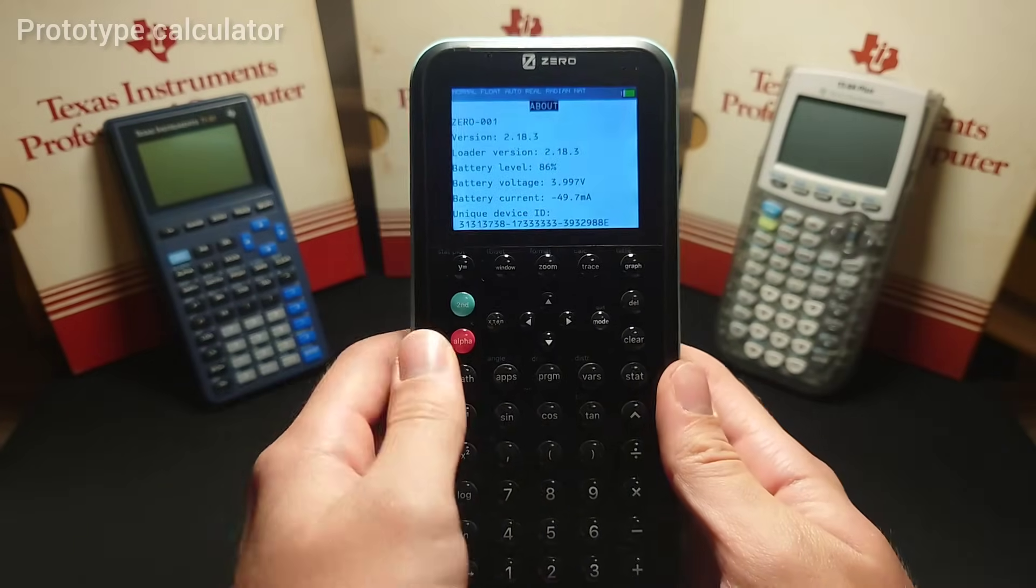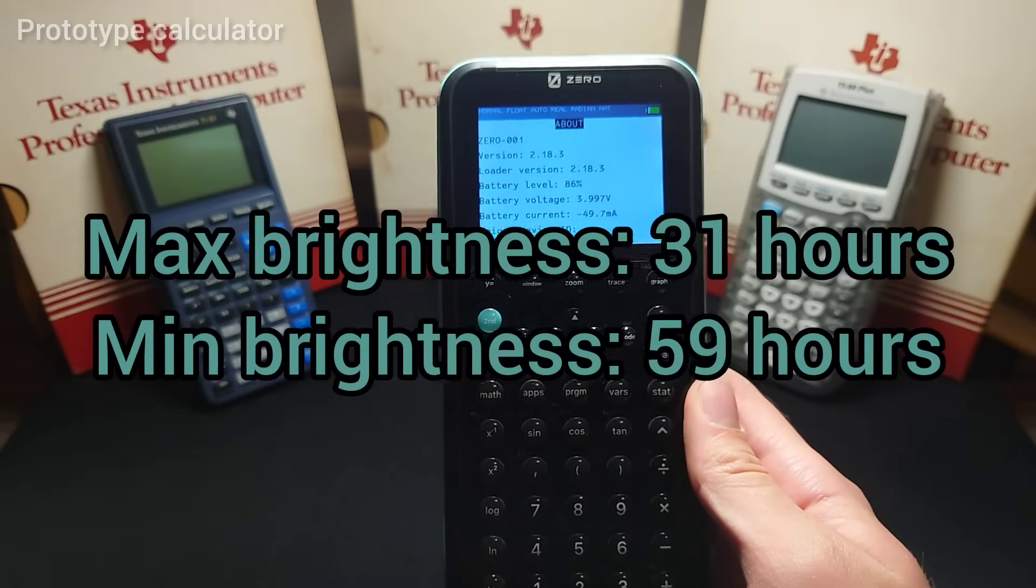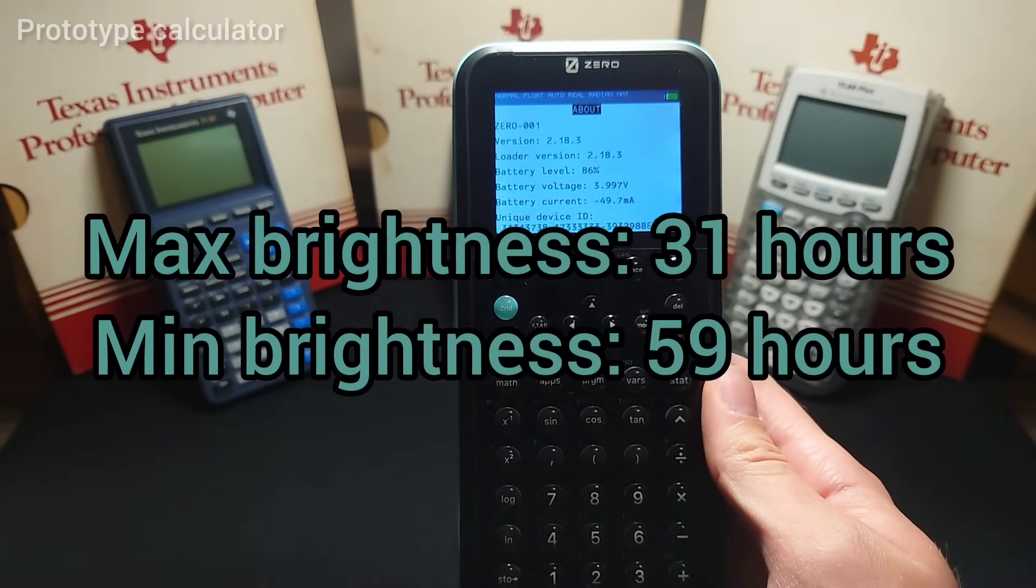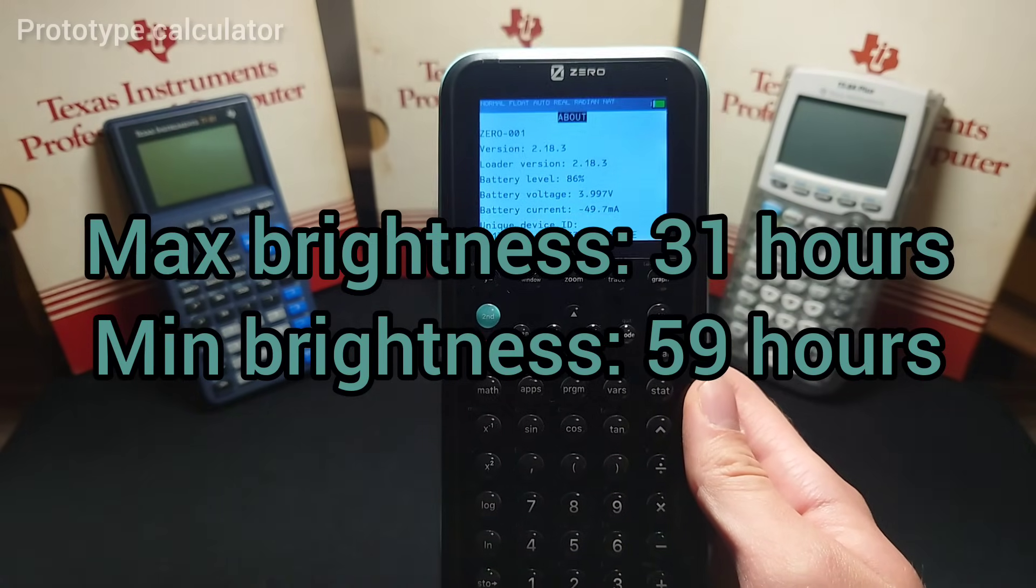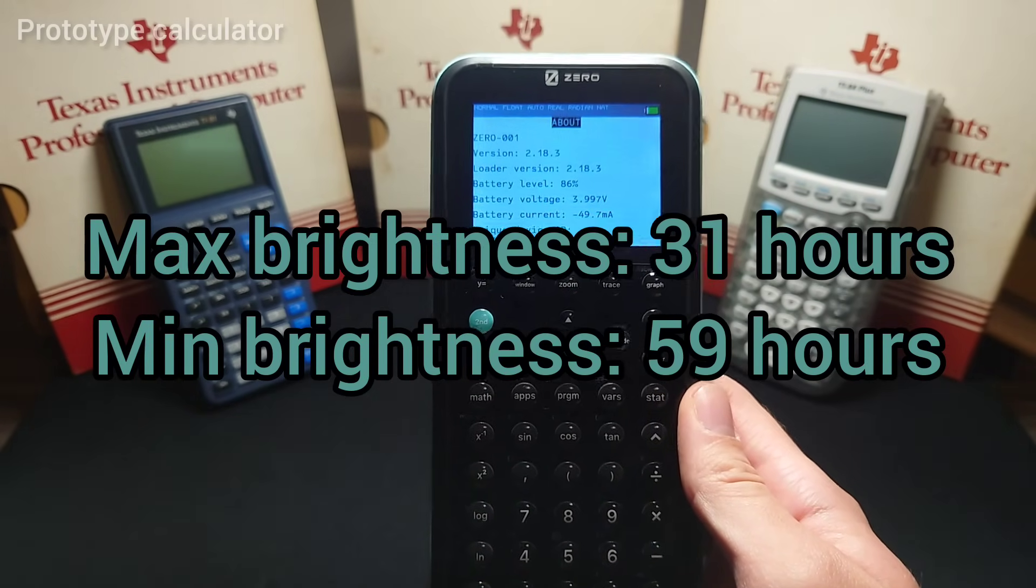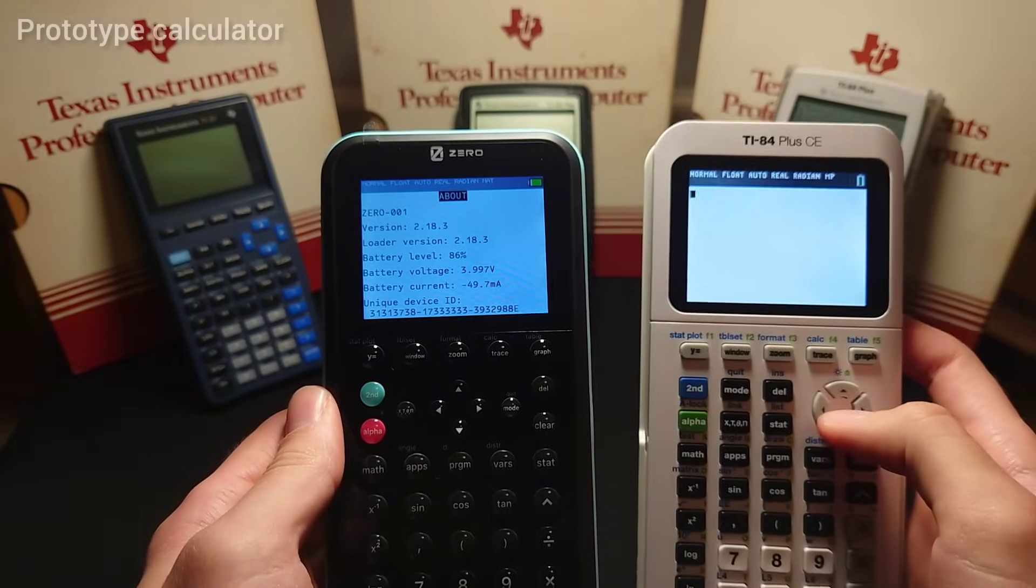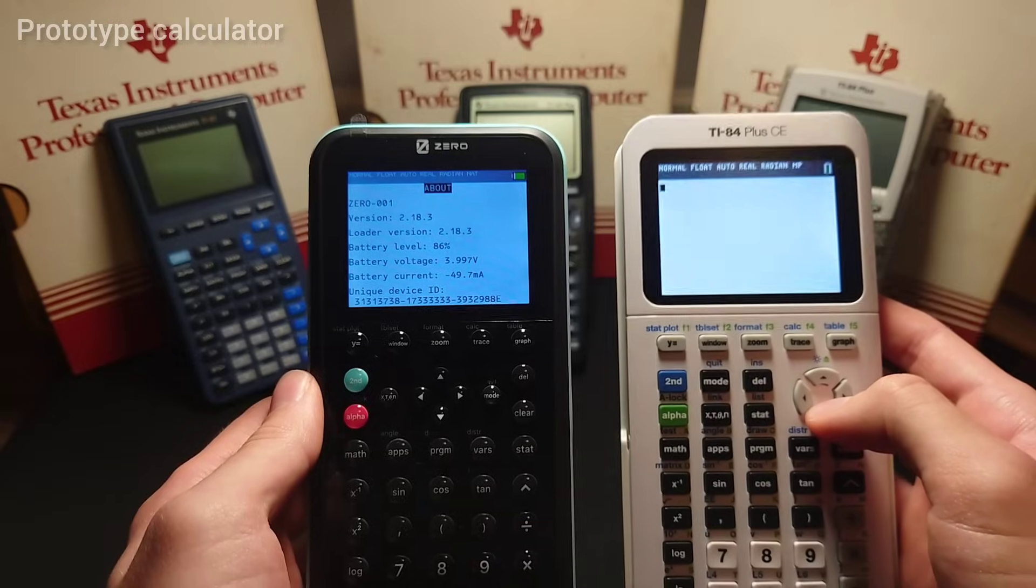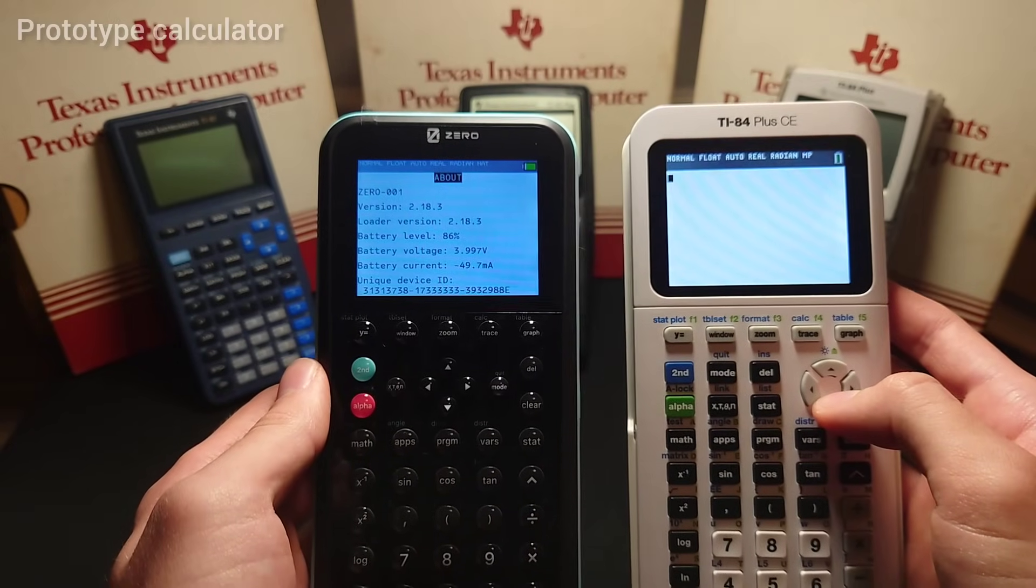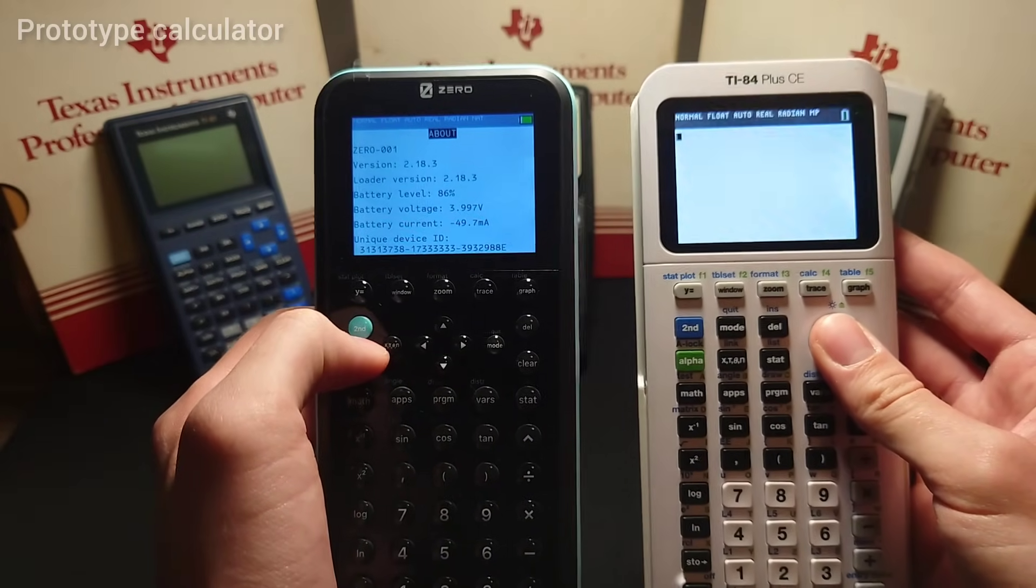Now, extrapolating from this data, assuming it's correct, you should expect anywhere between 31 and 60 hours of battery life on this thing. However, real-world use may affect that significantly. For reference, a TI-84 Plus CEs on maximum brightness, running a program on heavy load will last about 26 hours before dying.